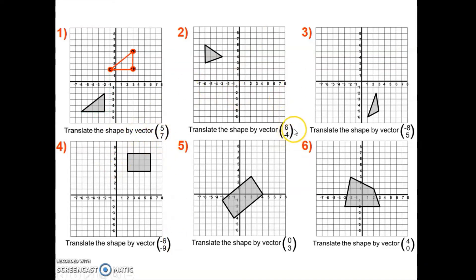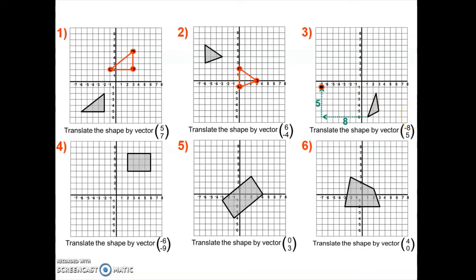For question two, I'm dealing with the vector six, minus four — so six to the right and four down. Again, I've got three points to deal with. Six to the right and four down for each point on this triangle, then I take my ruler and draw in my translated shape. It is still exactly the same size — still congruent. Here is my image. Question three, I'm translating by minus eight, five — so eight to the left and five up. I take each individual point: eight to the left and five up for each one, then draw in my new shape. There is my image.